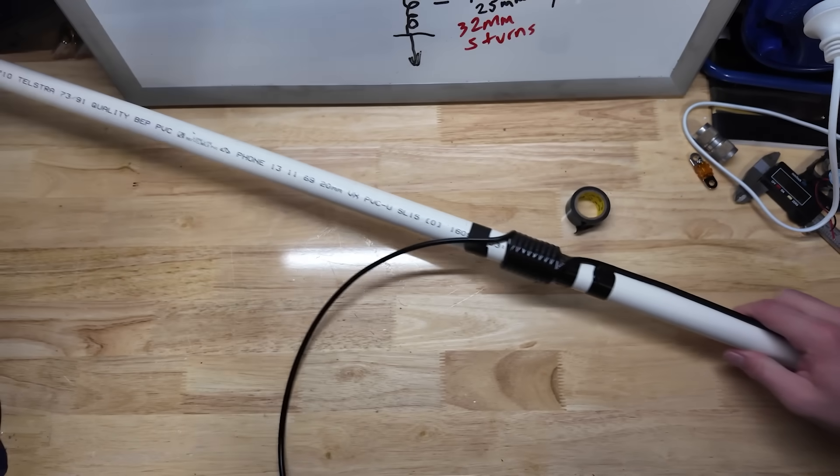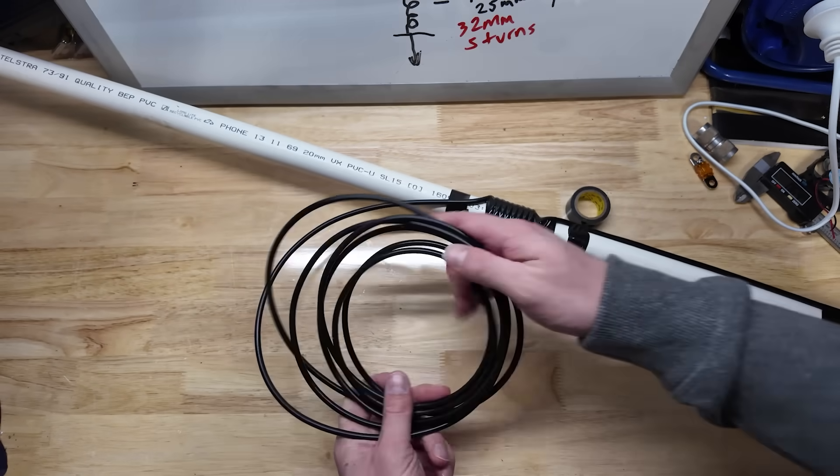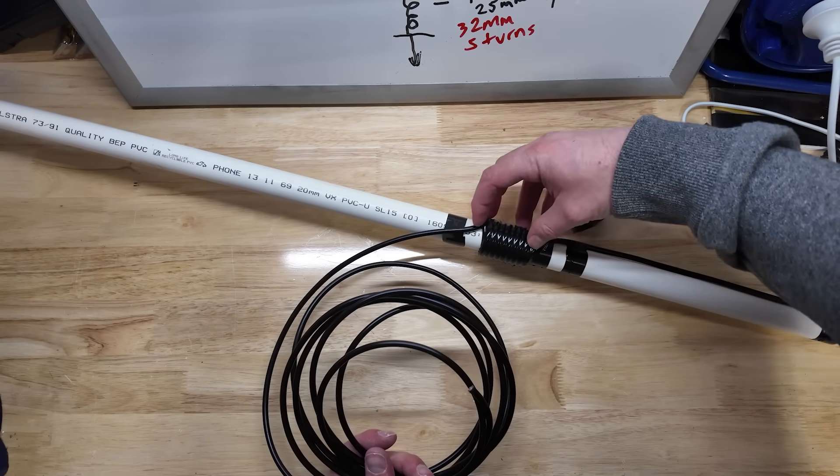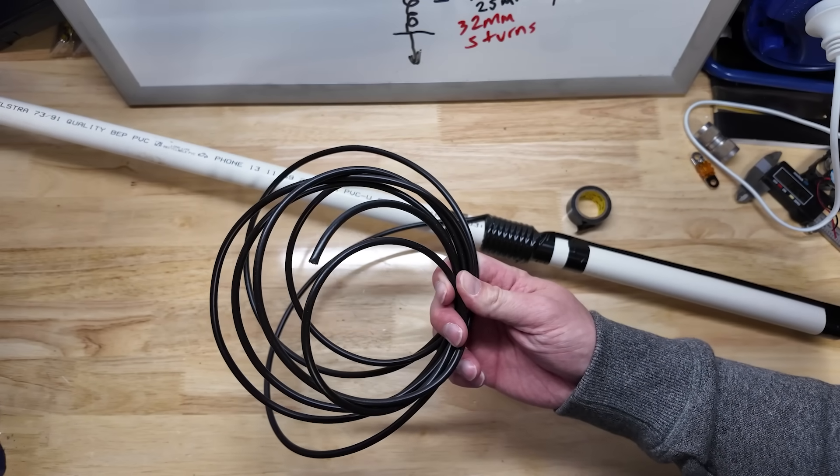And I've now got a short tail here of coax, which I cut off earlier. I just measured maybe a couple of meters. The coil wasn't going to use that much. And now all I've got to do is put a connector on this and we can go and test it.